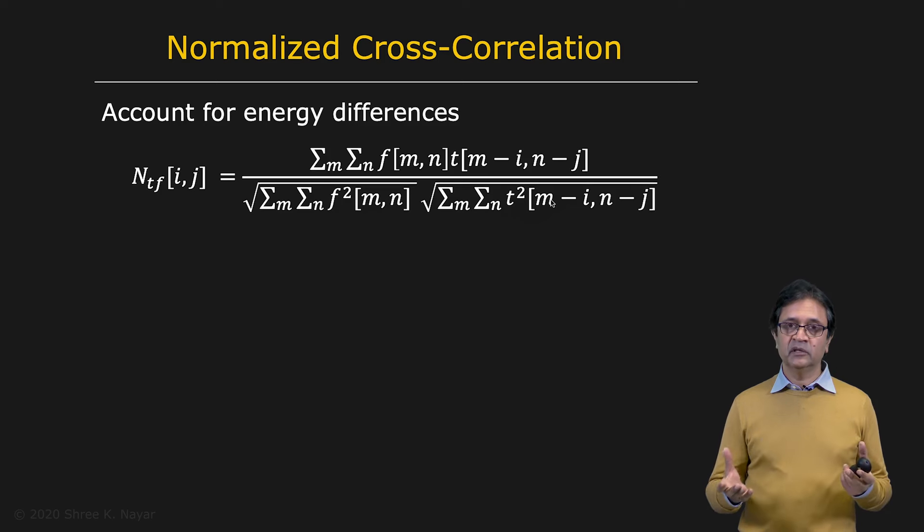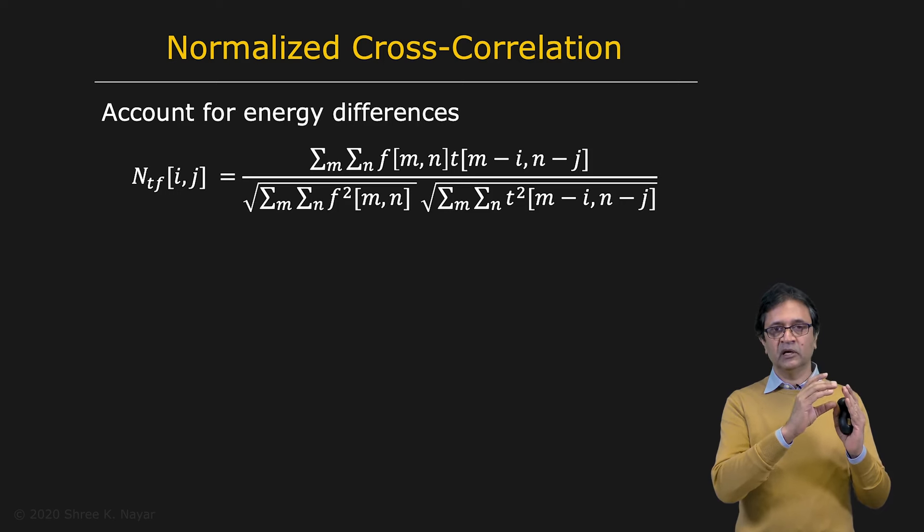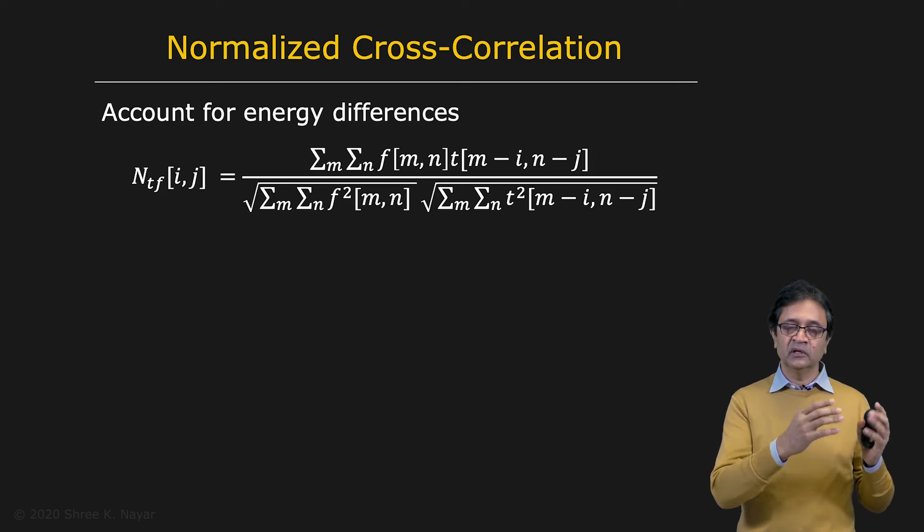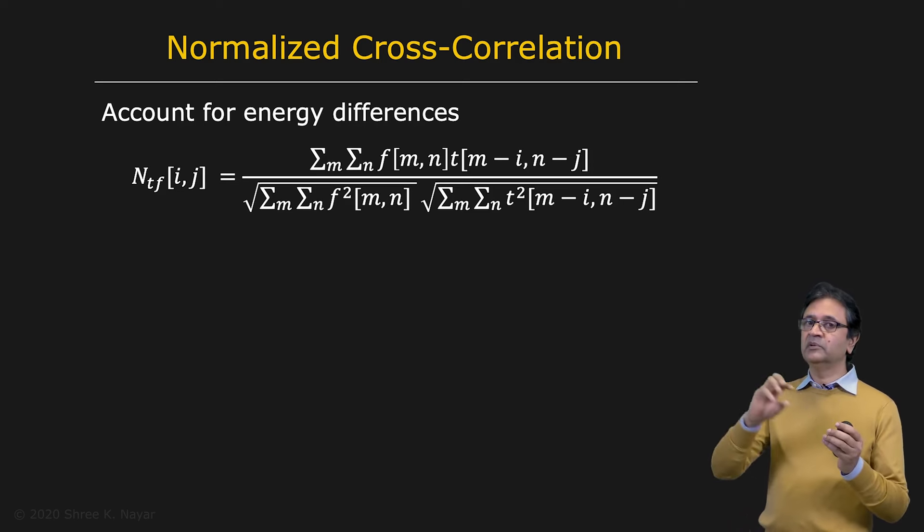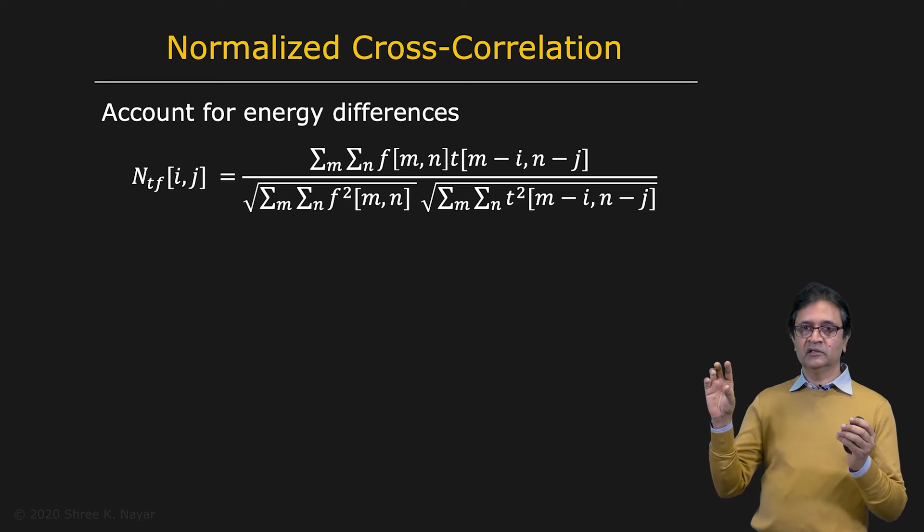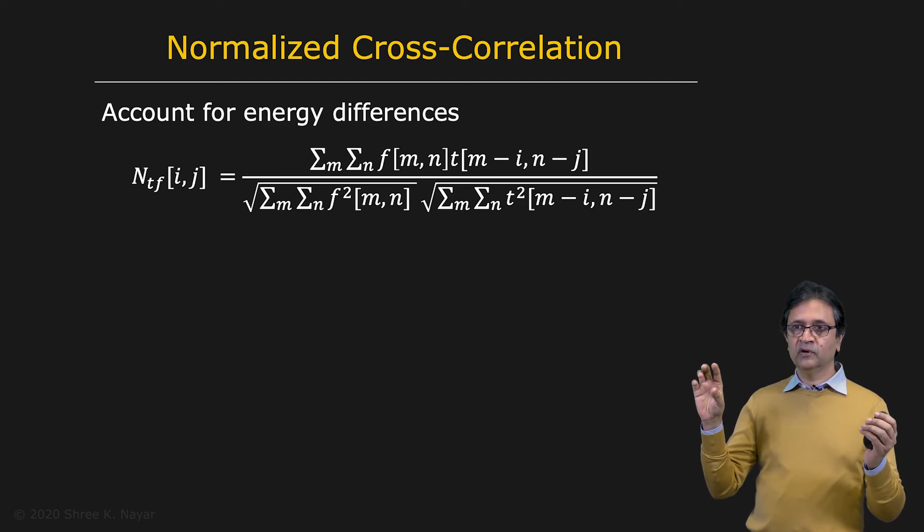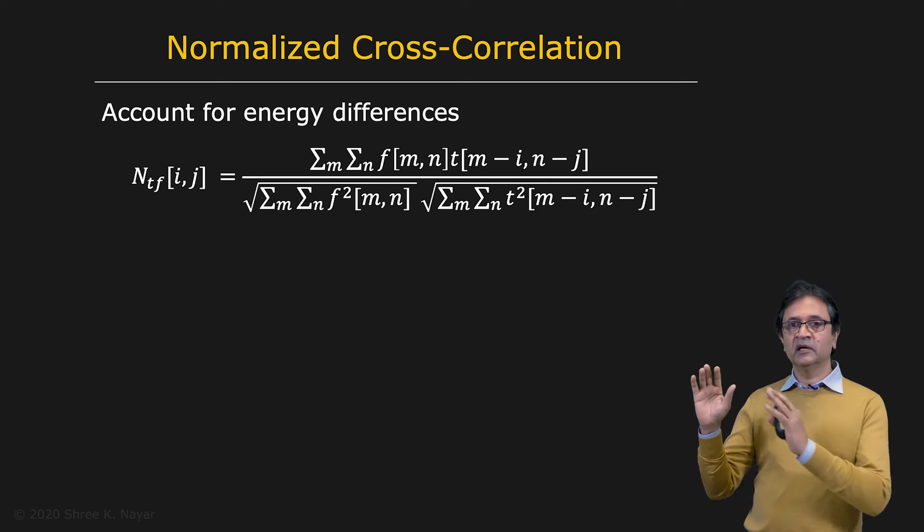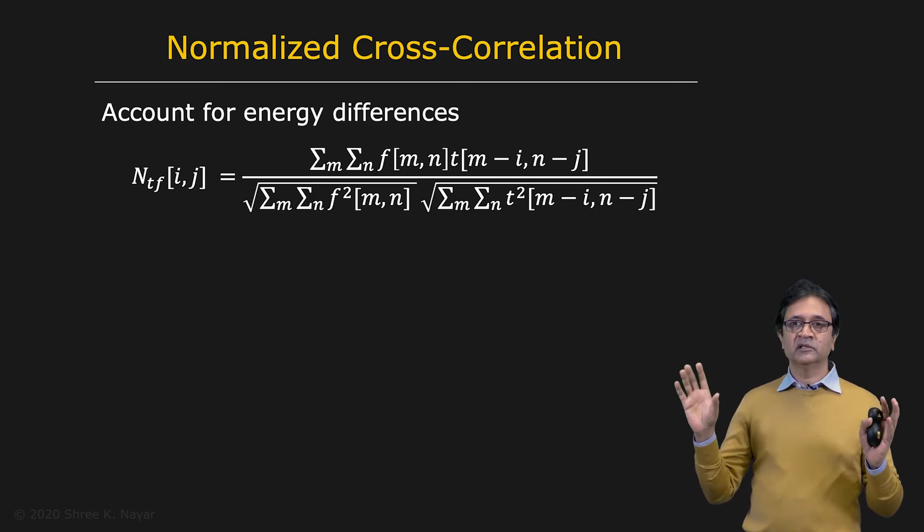So by doing this, you make the cross correlation insensitive to changes in brightness. Let's say you had a template that you captured, a pattern that you captured with the camera at some point. It was taken under some lighting conditions and camera gain and so on. And then this pattern appears exactly in its true form, except under a different lighting condition, different camera gain in a scene. It doesn't matter. Using this normalized correlation, you can find it to be an exact match in the image.